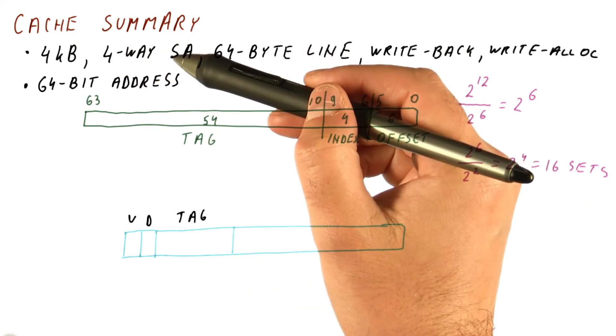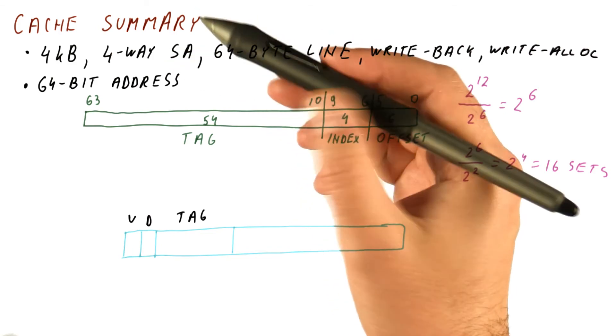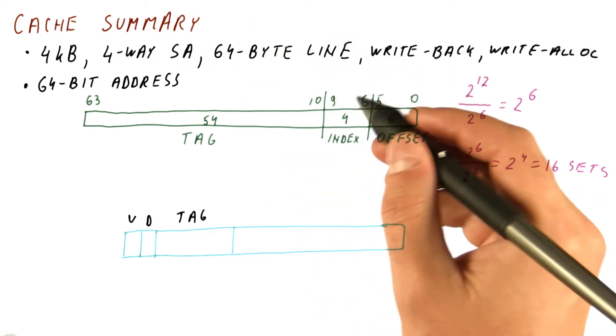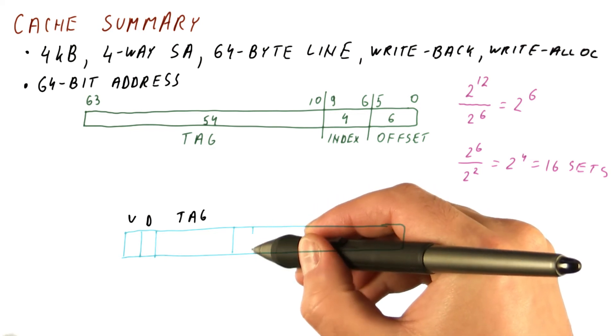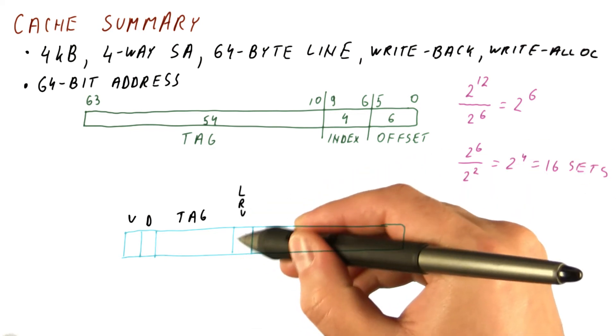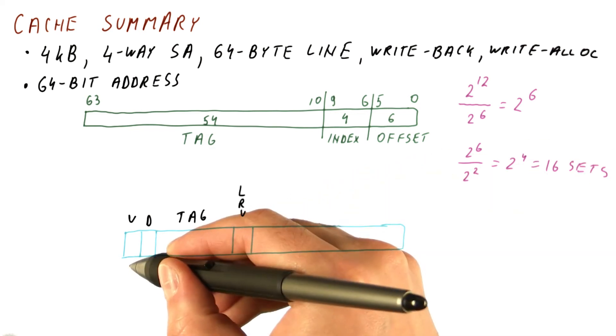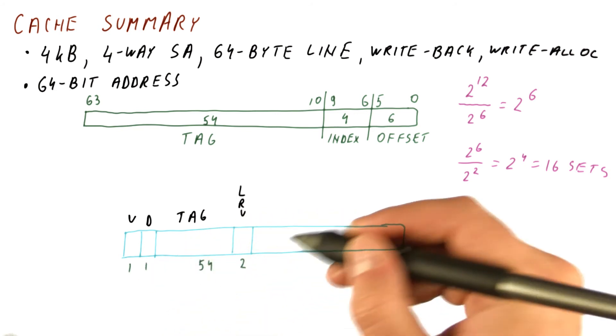It's a four-way set associative cache, so we need to pick a replacement policy. Let's say the replacement policy is LRU. For a four-way set associative cache, each block needs to have a two-bit LRU counter. So here we have one, one, 54, two.